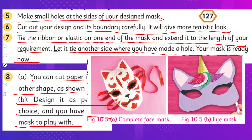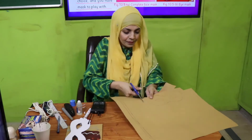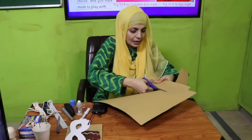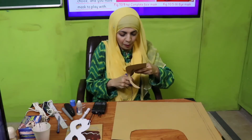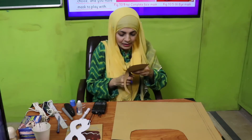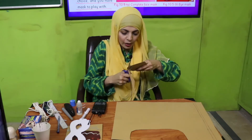You will also need a punch to make holes. Now you will cut the eye mask. After your eye mask stencil is ready, cut it out. Once it is cut, we will paint it and cut out the eye holes as well.